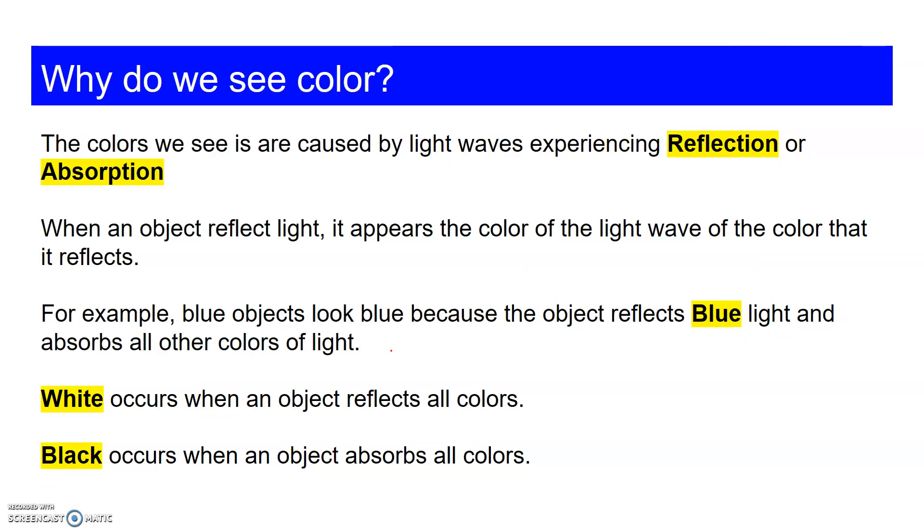So why do we see different colors? The colors we see are actually caused by light experiencing reflection and absorption. We talked about this last week. When light hits an object, it can either reflect or absorb. Reflection happens when light comes in and bounces back off. Absorption happens when it comes in and goes in and doesn't come out.